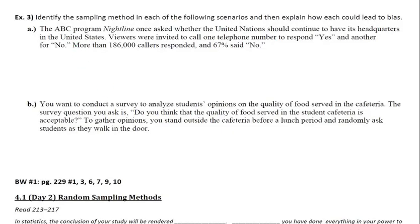So the last example here says identify the sampling method in each of the following scenarios and then explain how each could lead to bias. So part A says the ABC program Nightline once asked whether the United Nations should continue to have its headquarters in the United States. Viewers were invited to call one telephone number to respond yes and another for no. More than 186,000 callers responded and 67% said no.